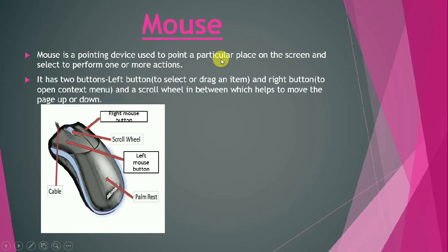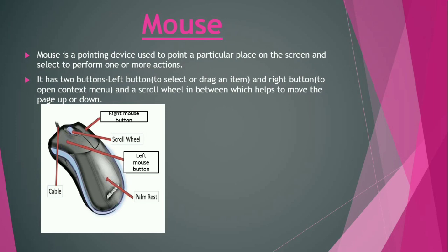Mouse is a pointing device which is used to point at a particular place on the screen and select to perform one or more actions. A mouse has two buttons — left button and right button — and in between the two buttons there is a scroll wheel, which helps us to move the page up and down. The left mouse button can be used to select an item or to drag any icon from one place to another.